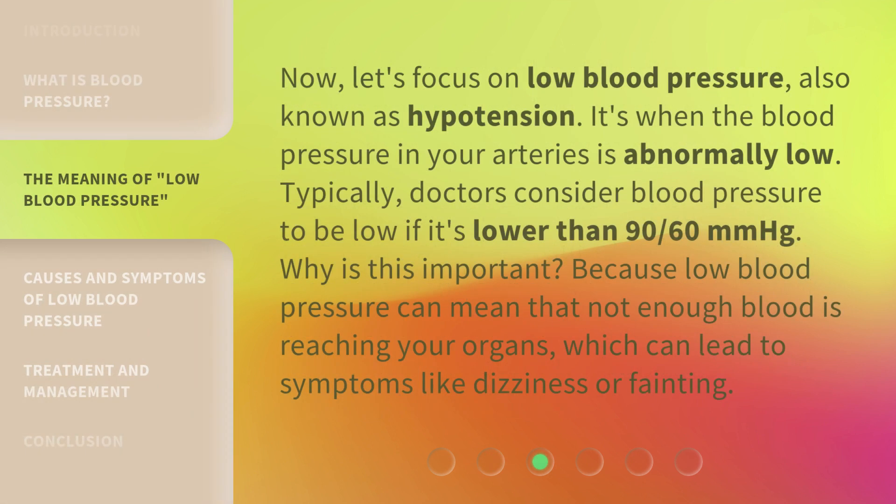Now let's focus on low blood pressure, also known as hypotension. It's when the blood pressure in your arteries is abnormally low. Typically, doctors consider blood pressure to be low if it's lower than 90/60 mmHg. This is important because low blood pressure can mean that not enough blood is reaching your organs.